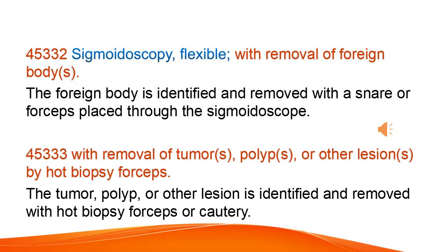Sigmoidoscopy, flexible, with removal of foreign body. The foreign body is identified and removed with a snare or forceps placed through the sigmoidoscope. With removal of tumor, polyp, or other lesion by hot biopsy forceps — the tumor, polyp, or other lesion is identified and removed with hot biopsy forceps or cautery.